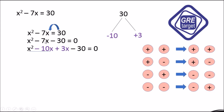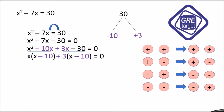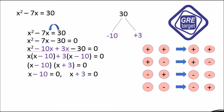So let's replace -7x: we get x² - 10x + 3x - 30 = 0. Now take the common from the first two terms — the common is x — so we get x(x - 10). From the last two terms, take common 3, so we get 3(x - 10). Now x - 10 is common on both sides, giving (x - 10)(x + 3) = 0.